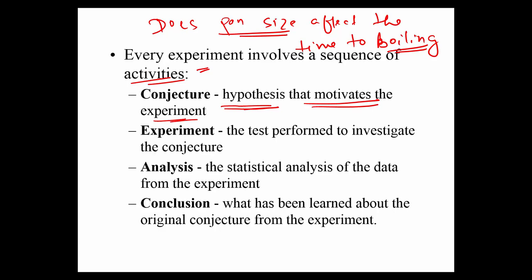The hypothesis should be very clear before starting the experiment. The experiment itself is the test performed to investigate the conjecture — for example, take different pan sizes, boil water, record the time. You might use 10 different pan sizes, with corresponding time records for each. You then use statistical analysis of the data to draw a conclusion — whether pan size is a factor affecting time to boil water. The final stage is the conclusion made from the statistical analysis.